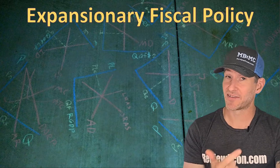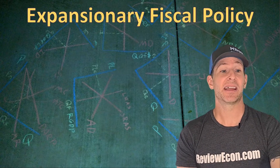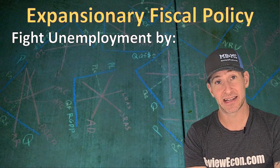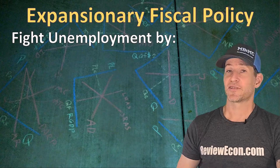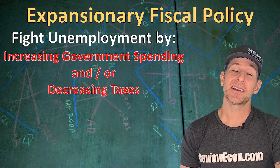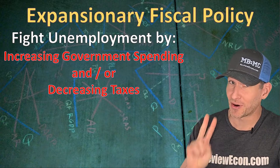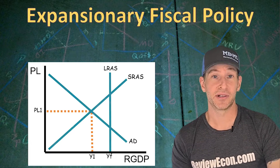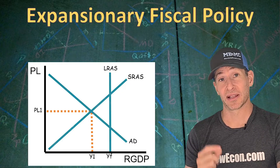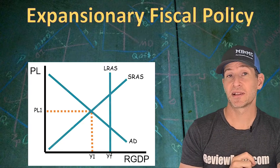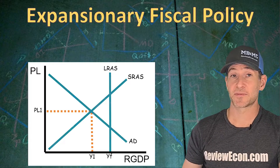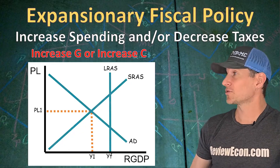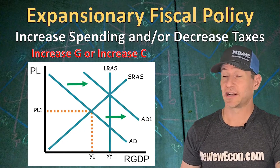Now that we know the fiscal policy tools of taxes and government spending, let's talk about expansionary fiscal policy. Expansionary fiscal policy is when the government is trying to fight unemployment — meaning we have a recessionary gap and our current output is less than our full employment level of output. To fight unemployment, the federal government could increase government spending and/or decrease taxes. Either or both of those actions can close a recessionary gap. In the AS-AD model, Y1 (our current short-run equilibrium) is less than YF (the full employment level of output), so we have high unemployment. Increasing government spending or decreasing taxes increases G or C, shifting the aggregate demand curve to the right and restoring long-run equilibrium.